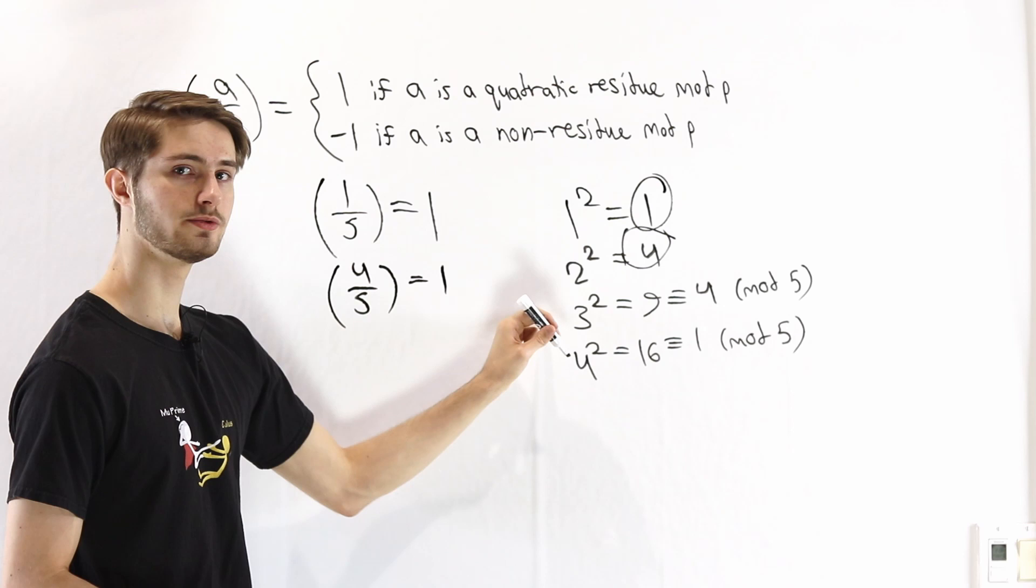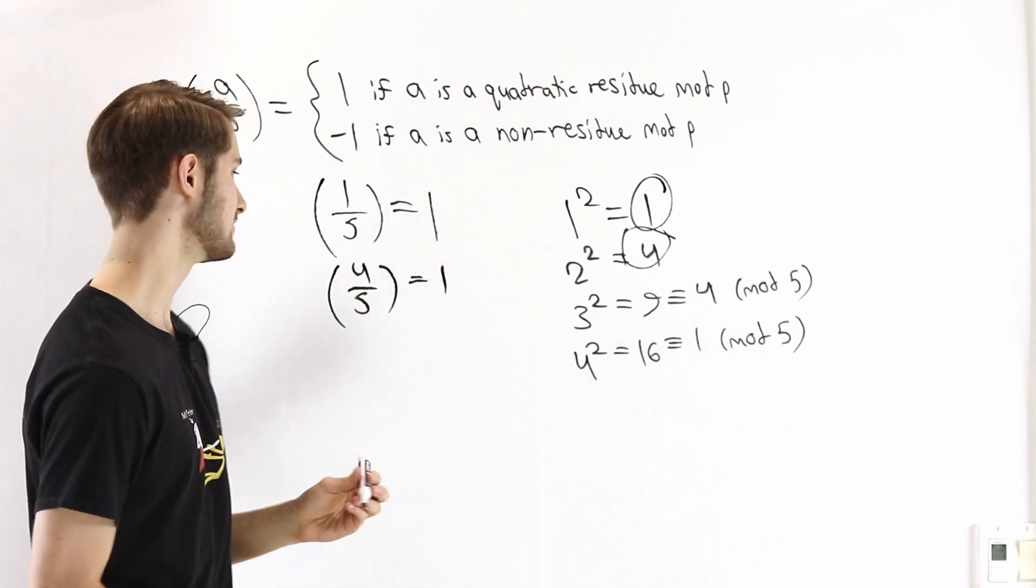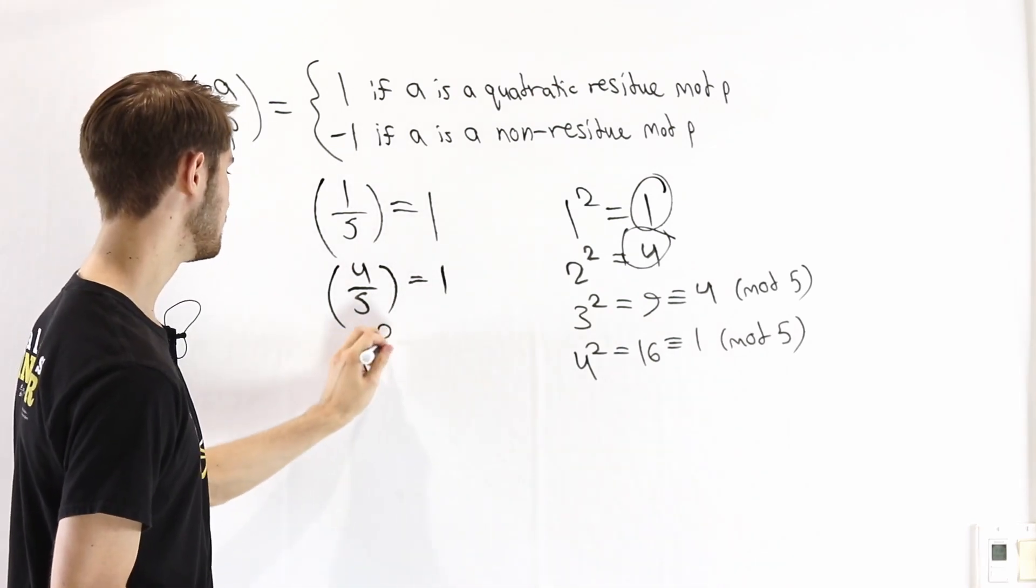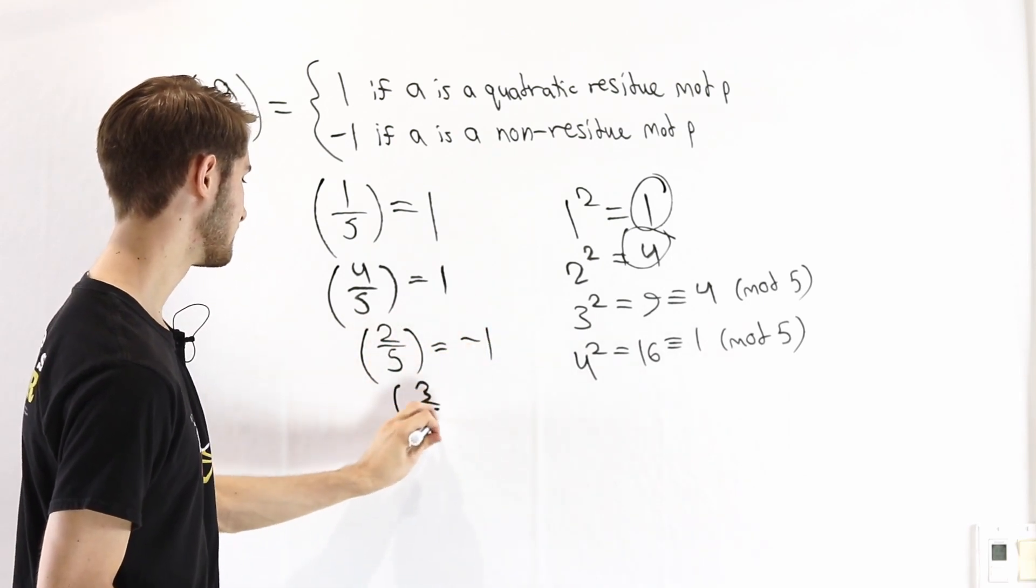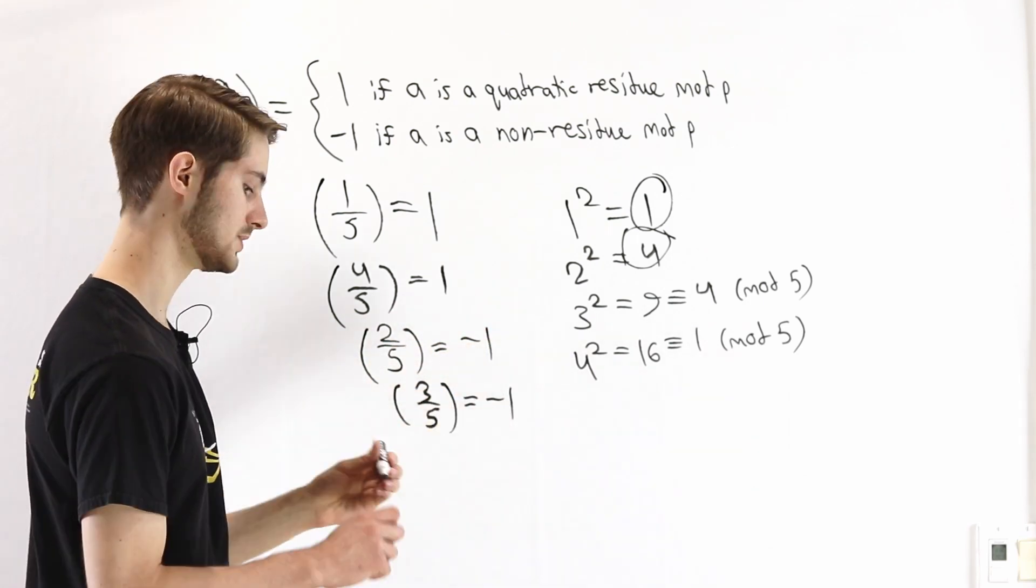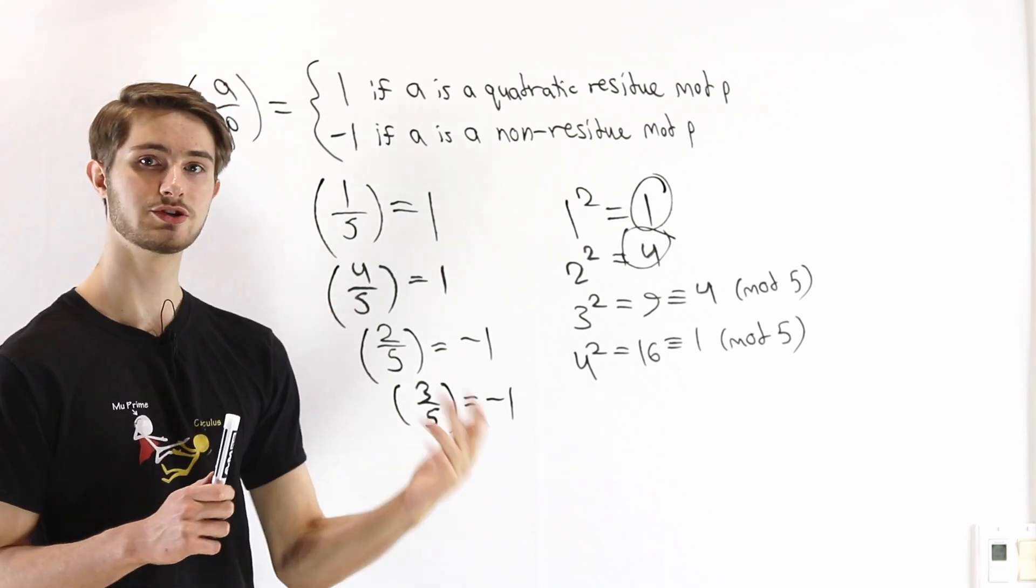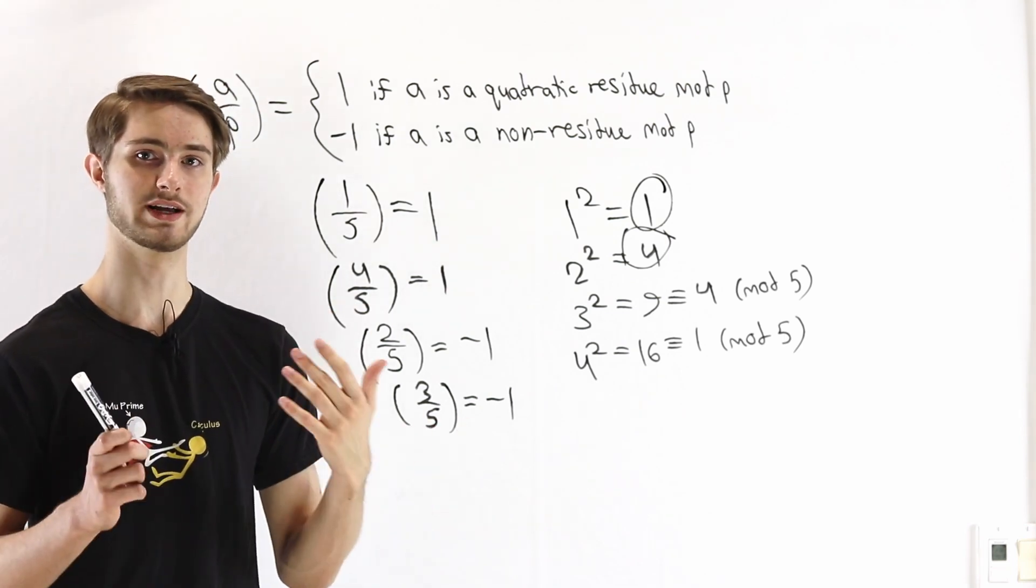On the other hand, 2 and 3 are quadratic non-residues. That means that we can write 2 on 5 equals negative 1, and 3 on 5 also equals negative 1. So that's how we use the Legendre symbol to describe quadratic residues.